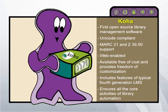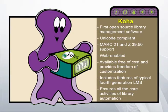Koha includes a Z39.50 client through which you can download validated MARC records from different Z39.50 servers globally, and at the same time you can use Koha to serve your validated MARC records to other libraries. So Koha can act as both a Z39.50 client and Z39.50 server simultaneously — a unique feature. Right from the beginning it is web-enabled, available free of cost, and provides freedom of customization including all features of a 4th-generation library management system.